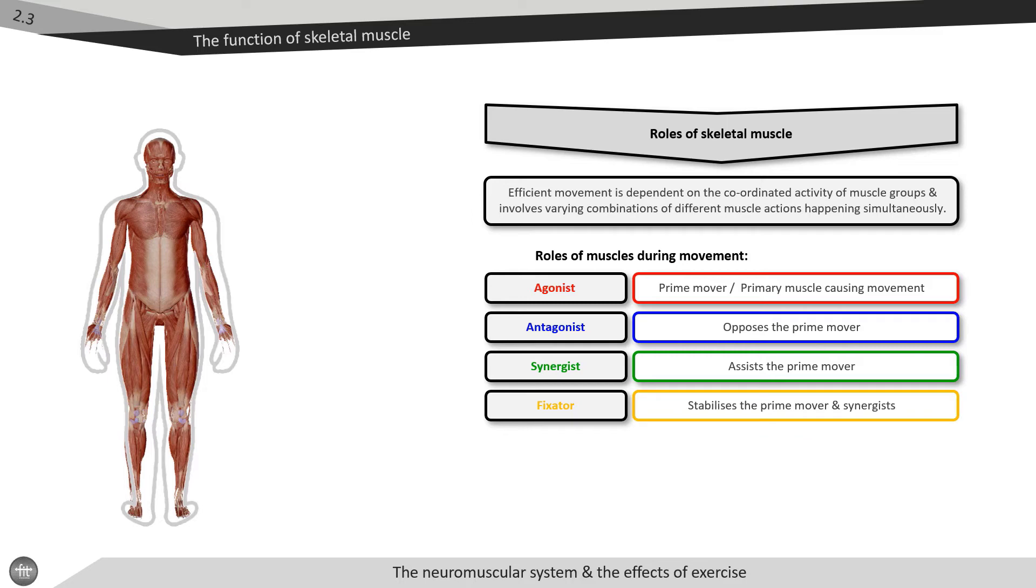Finally, we have fixator muscles which stabilize the part of the body that remains fixed, such as the trapezius stabilizing the shoulder joint during a bicep curl.